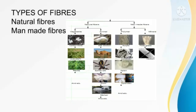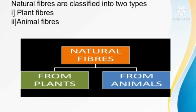Next, types of fiber. There are two types: one is natural fiber, another is man-made fiber. Natural fibers are obtained from plants and animals. Man-made fibers are obtained from chemicals. Natural fibers are further classified into animal fiber and plant fiber.